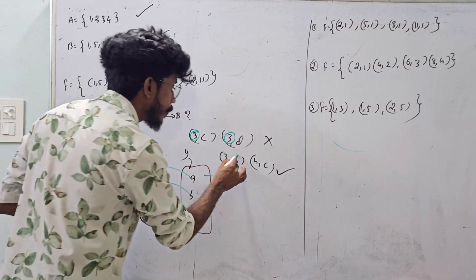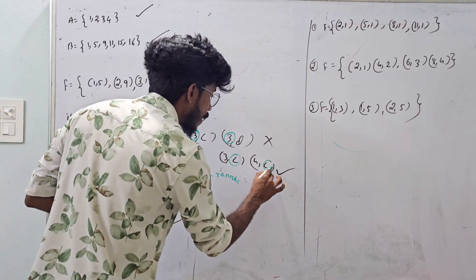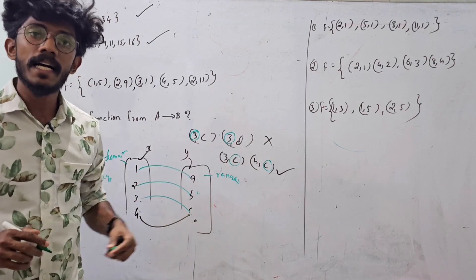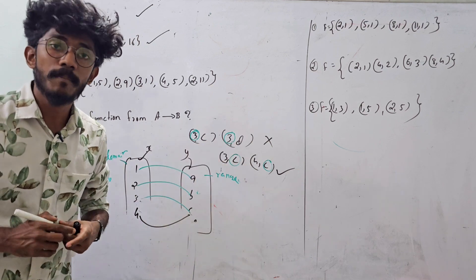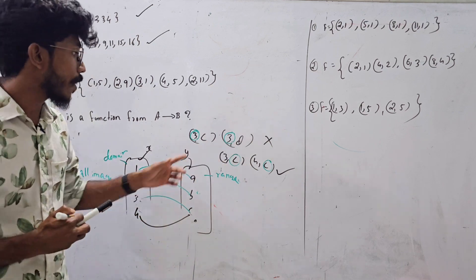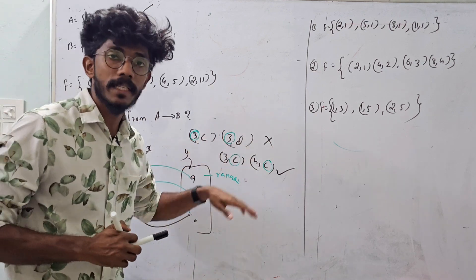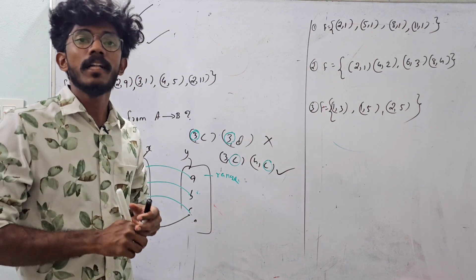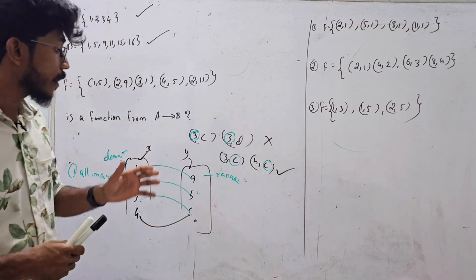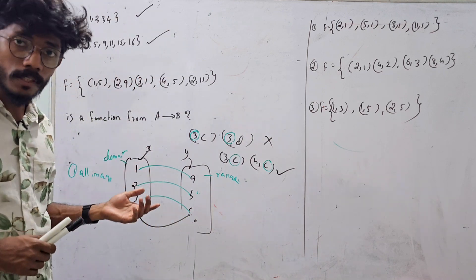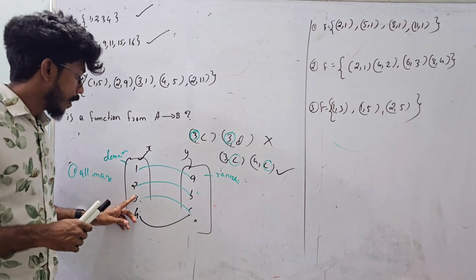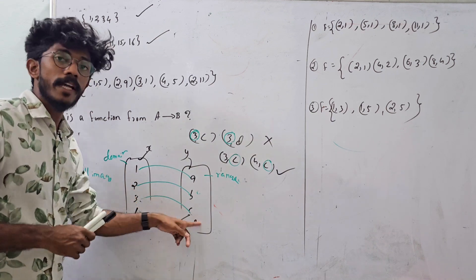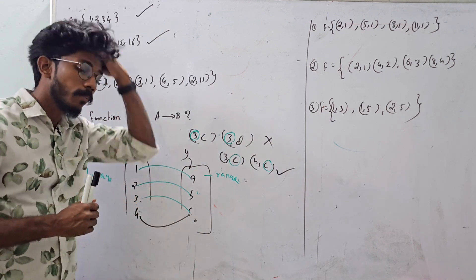One x value will give a different y value — that's impossible. One x cannot map to two different y values in a function.